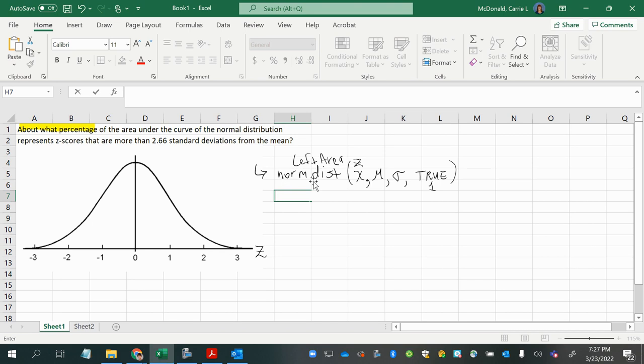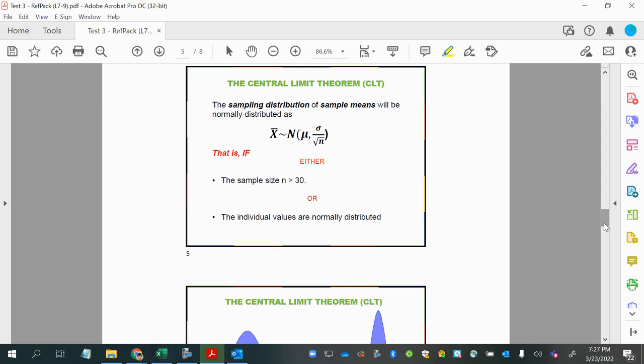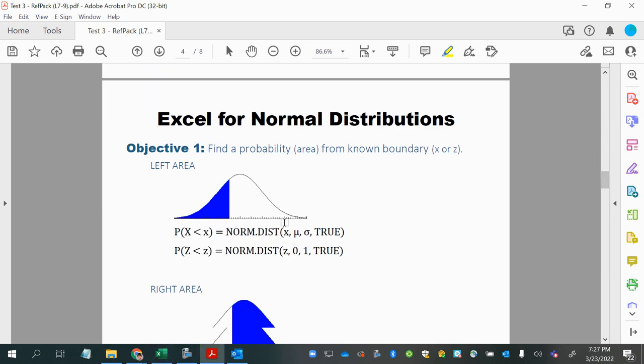Now, using Excel formula, norm.dist, is done whenever you are looking for a left area. We have a page in our reference packet when it comes to using Excel for normal distributions.